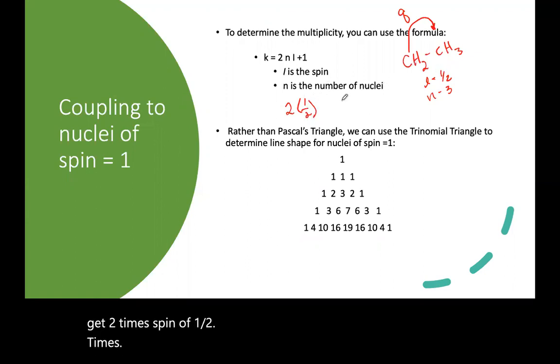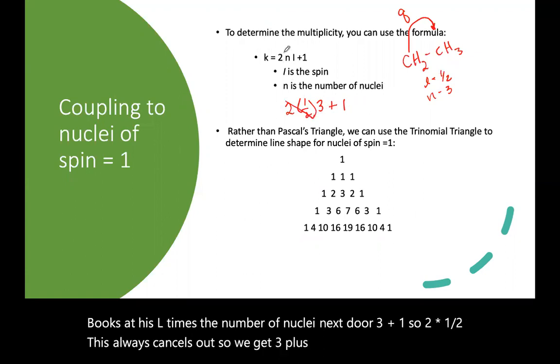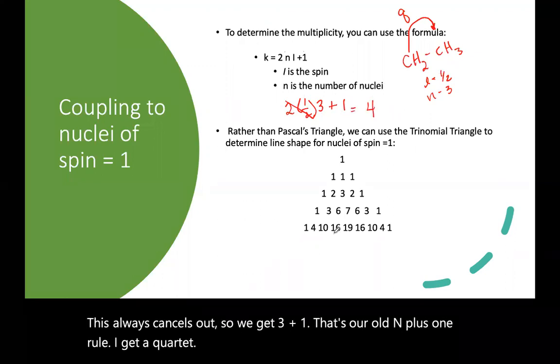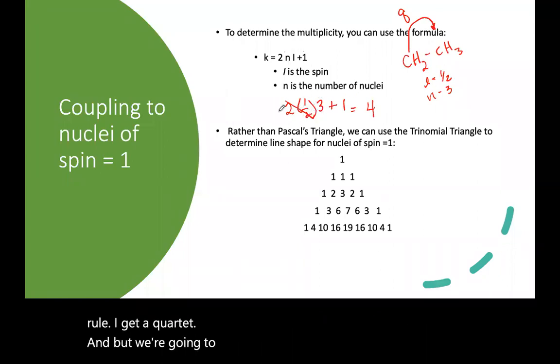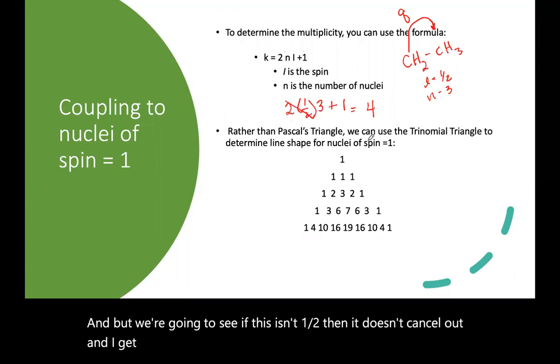And so that is I times the number of nuclei next door, three plus one. So two times a half. This always cancels out. So we get three plus one. That's our old N plus one rule. I get a quartet. But we're going to see if this isn't a half, then it doesn't cancel out. And I get some varieties. We'll see that in the next slide.